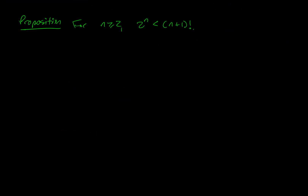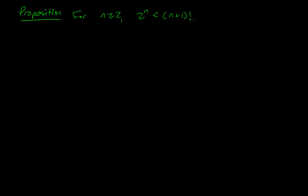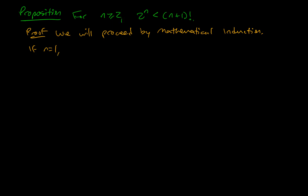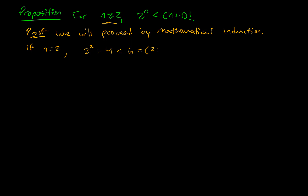My second proposition says: for n greater than or equal to 2, 2 to the n is less than n plus 1 factorial. We will proceed by mathematical induction. If n equals 1, then 2 to the first is less than 2 factorial — but 2 equals 2 factorial, so that's a problem. Since the proposition says n greater than or equal to 2, the base case is n equals 2. When n equals 2, 2 squared is 4, which is less than 6, which is 3 factorial — so the proposition holds.